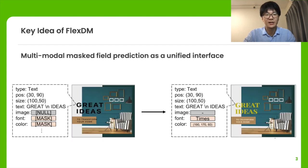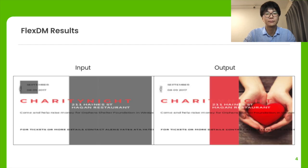FlexDM's key idea is doing masked field prediction in the multi-modal document domain as a unified interface. With this view, various design tasks can be represented by just changing a masking pattern. We experimentally show that FlexDM successfully solves various design tasks, and here is an example.